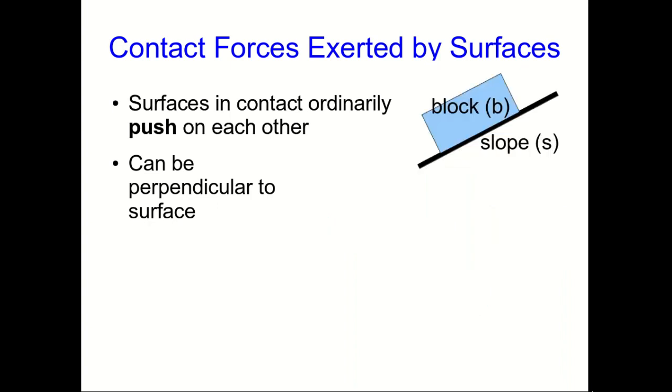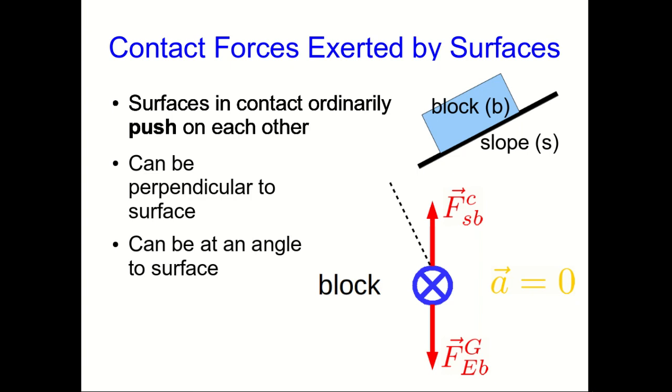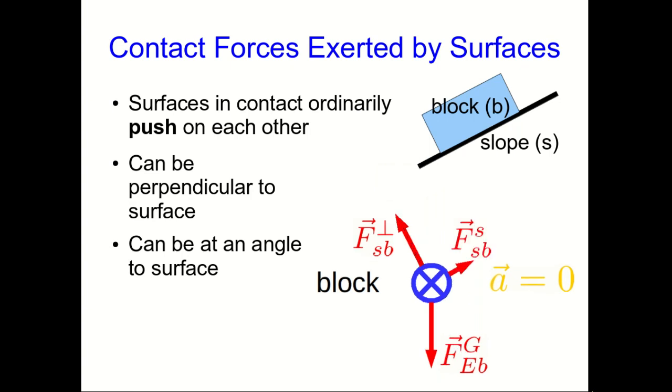But what about a situation like this, where there's a block on a sloped surface? Now, the block isn't going anywhere, and so again, the only way for the vector sum of forces to be zero is if the force exerted by the slope is straight up. And notice that that's not perpendicular to the slope anymore. The dotted line is perpendicular to the slope, and the force that the slope is exerting isn't pointing in that direction. So, the forces that surfaces exert can be at different angles to the surface. Even though we know it's straight up, it can be useful to think of it as a piece that's perpendicular to the surface and another piece that's parallel to the surface. So I'll redraw it that way.